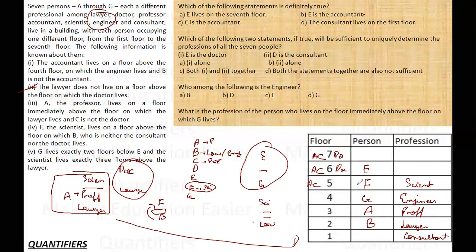What's left? Accountant and doctor — there's not much further information to pin them down individually. So one of the remaining floors has accountant and the other has doctor; these are the two open cases. C and D are the remaining people to be placed, with no additional direct information, so C and D can interchange between those positions.